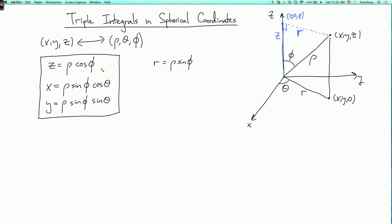And you can go the other way by noting that rho is the square root of x squared plus y squared plus z squared.